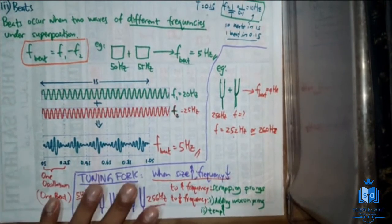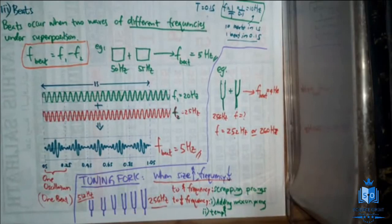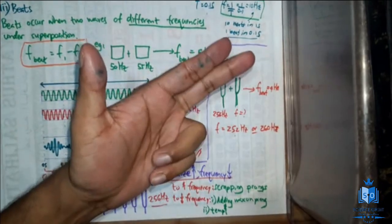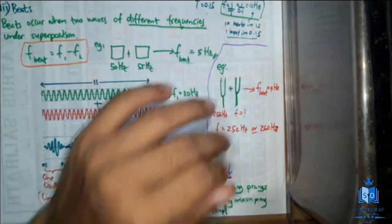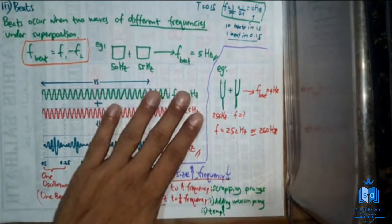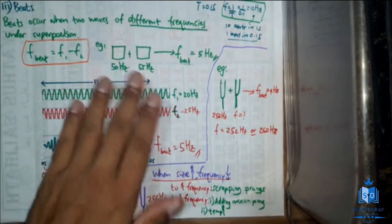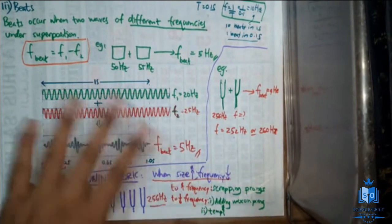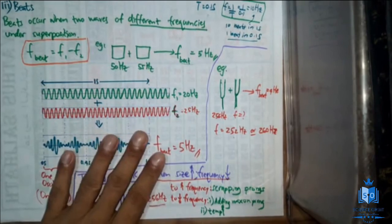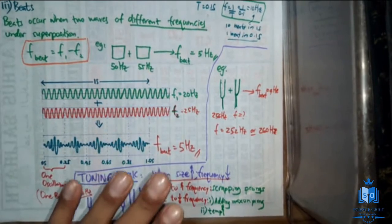We are done with all the properties of waves. We studied 5 properties: reflection, refraction, diffraction, polarization, and superposition. Except for polarization, all the other properties are common for all waves. Polarization can happen only in transverse waves — in longitudinal waves, polarization cannot be observed.